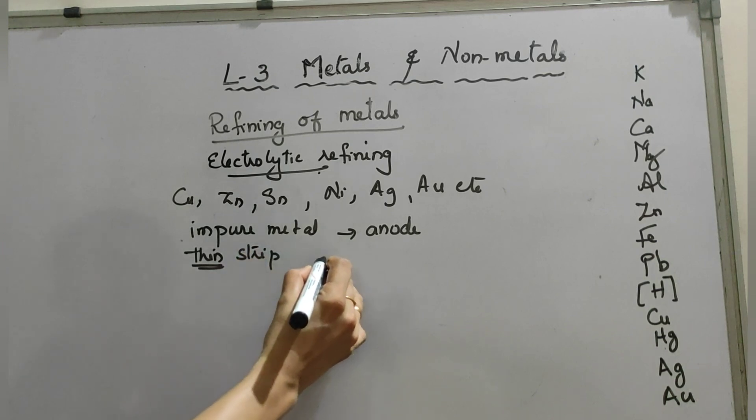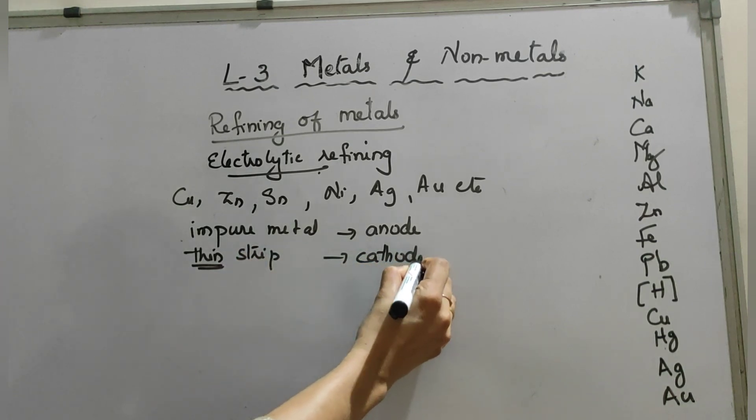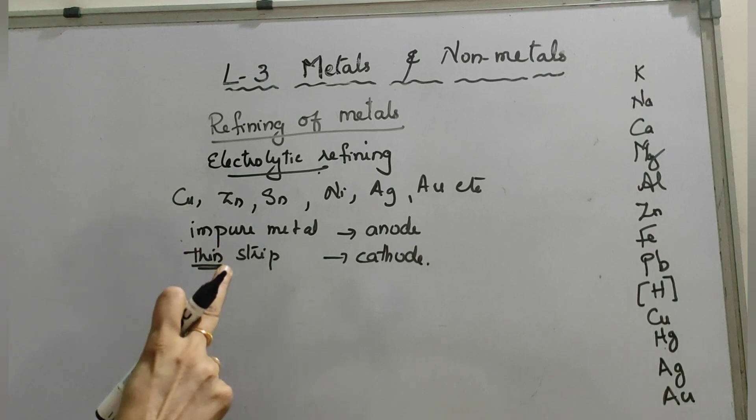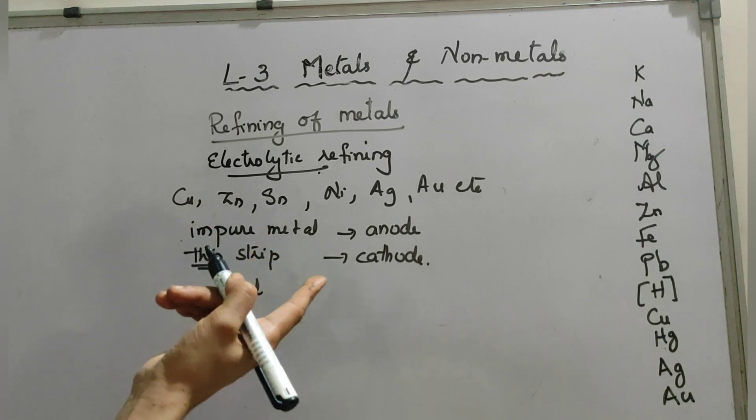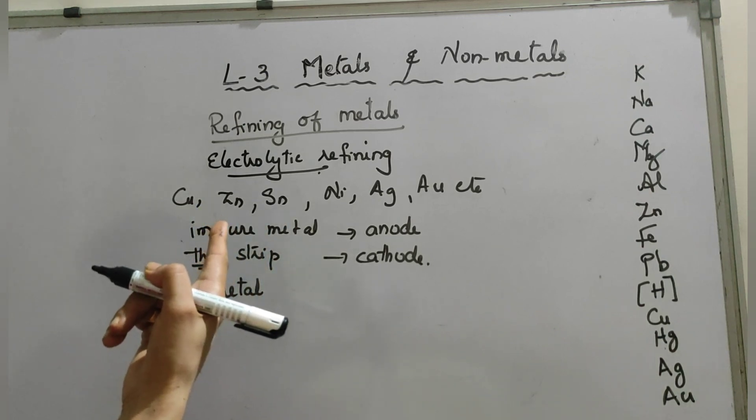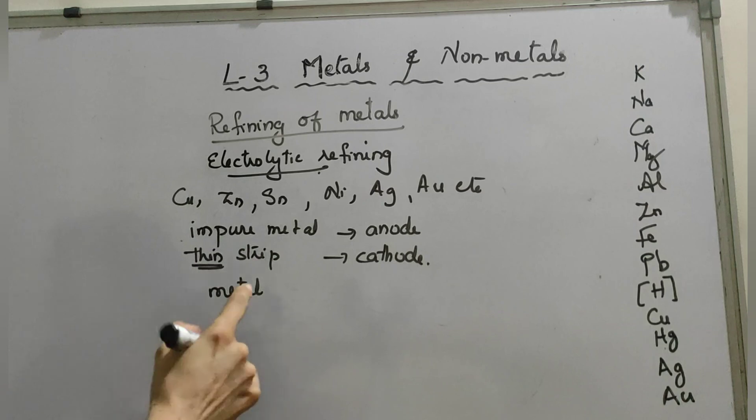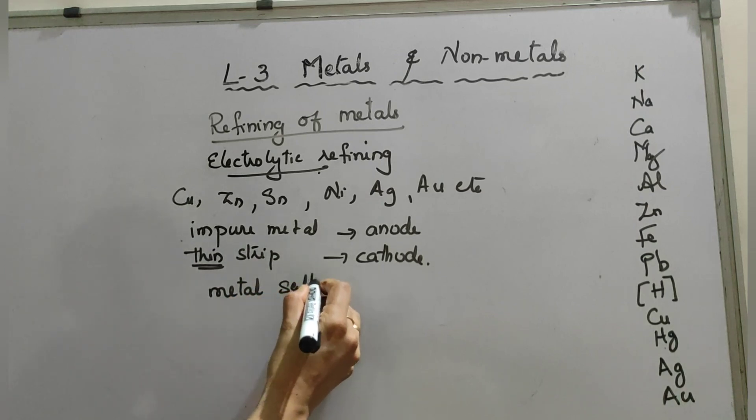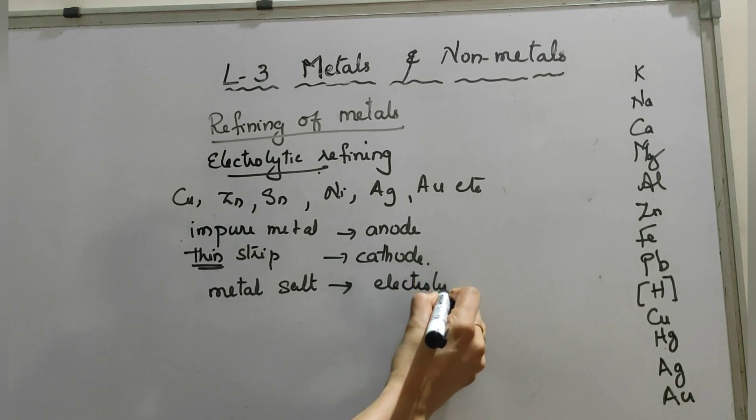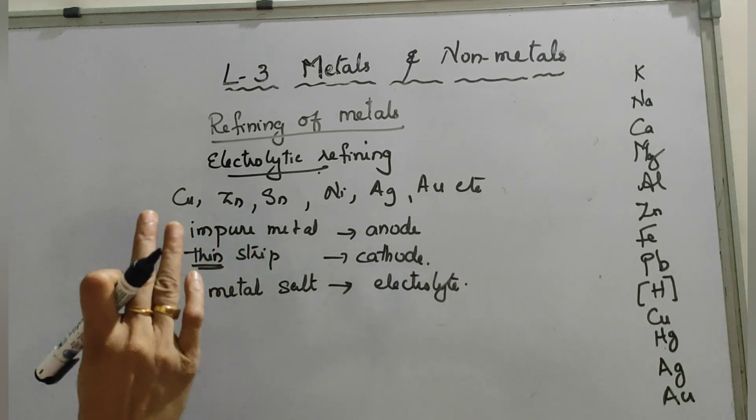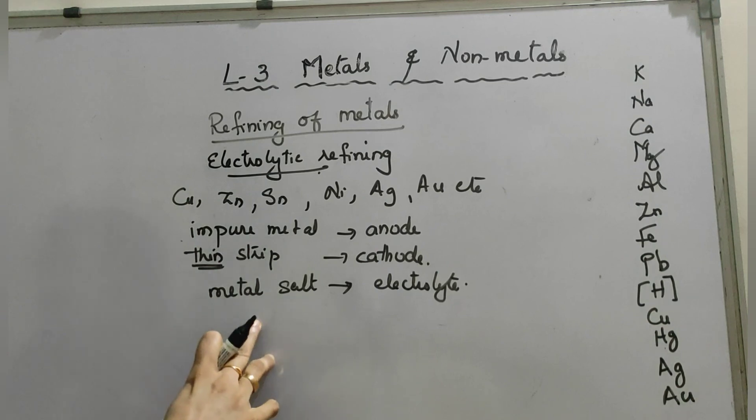A solution of metal salt is used as electrolyte. That means whichever metal we have to use for electrolytic refining, that metal salt is used as electrolyte. And the apparatus is set as of now, so we have to show in the figure.